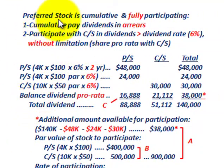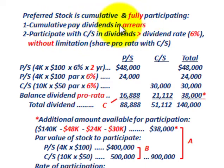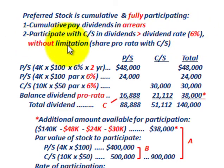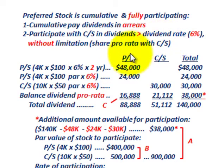The preferred stock is cumulative and fully participating. What we mean by cumulative is it's going to have to pay the dividends in arrears — those two years of dividends that are sitting unpaid. And two, you're going to participate with the common stock shareholders in dividends greater than the 6% stated dividend rate for the preferred stock, without limitations, sharing pro rata with the common stockholders.